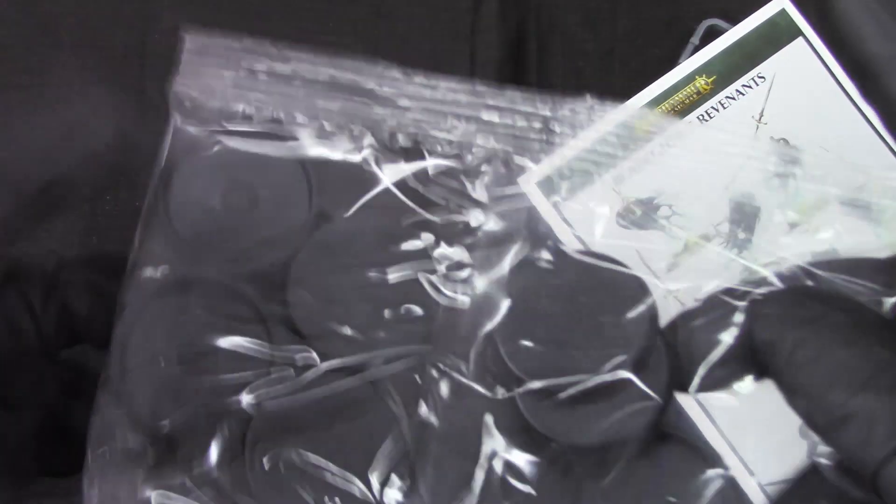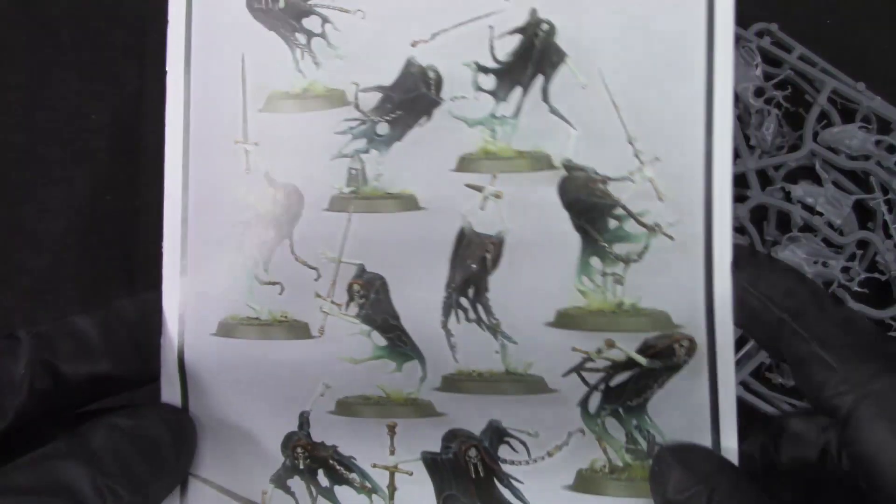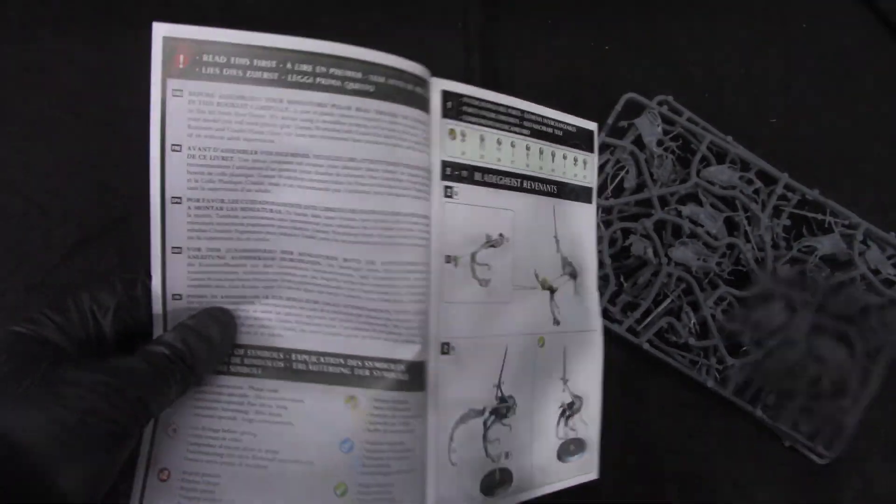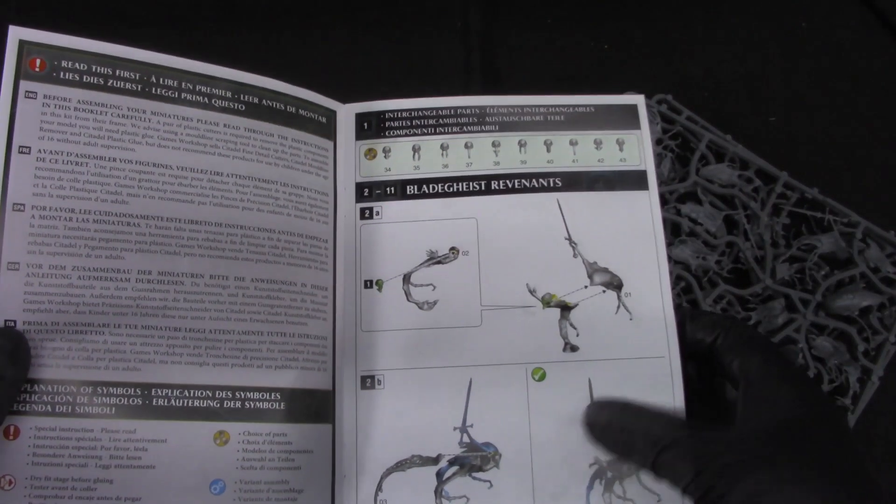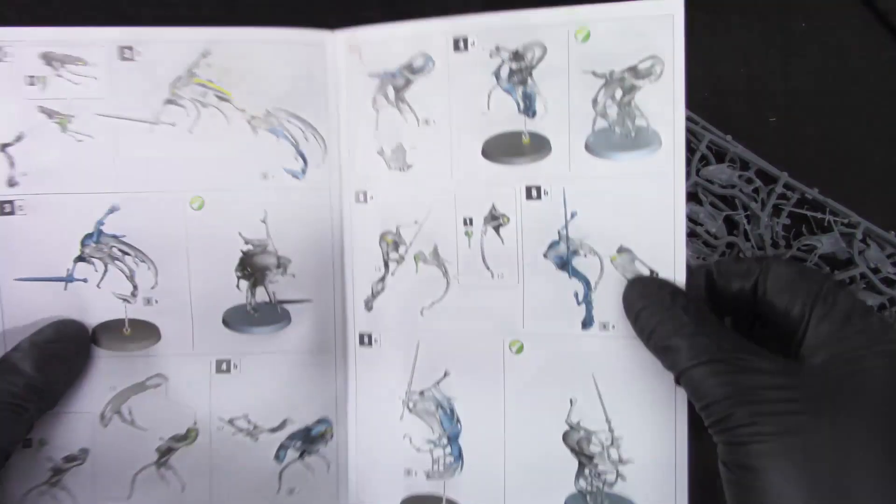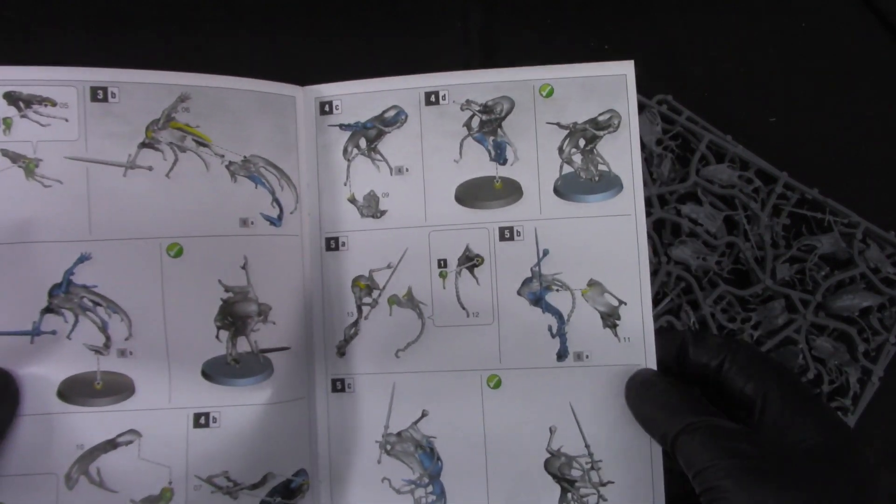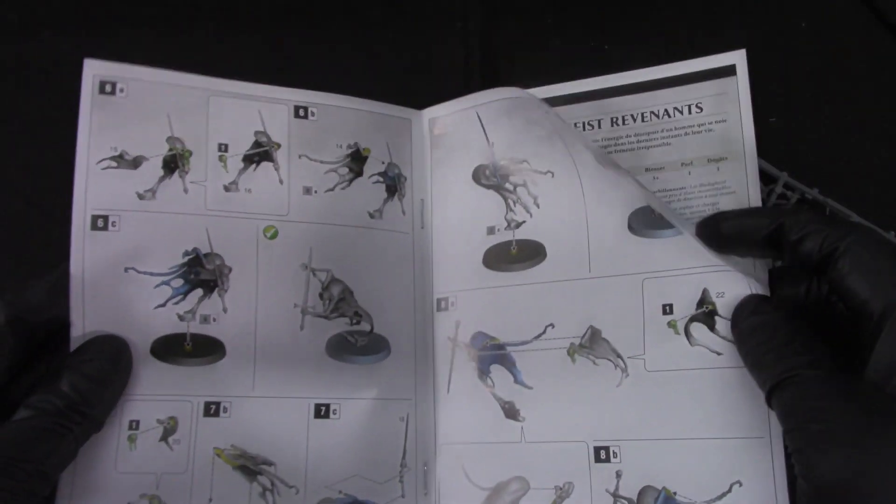So we get 10 Citadel bases. We get assembly guide. It's always good. I'll zoom. It's that the GW assembly guide, so it's spectacular. I think the only difference with these models is the heads which ones we put. That's it.